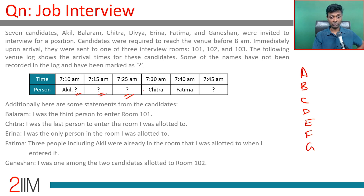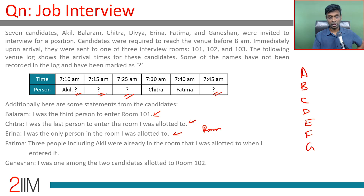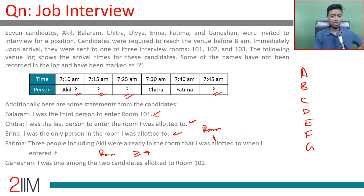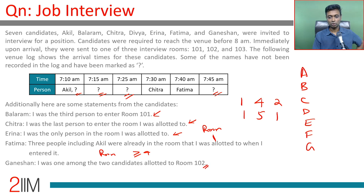Some names have not been recorded and are marked as question marks. Then we have statements from the candidates: Balram says he was the third person to enter room 101. Chitra says she was the last person to enter the room she was allotted to. Erina says she was the only person in the room she was allotted to. Fatima says three people including Akil were already in the room when she entered — so one room has at least four people.